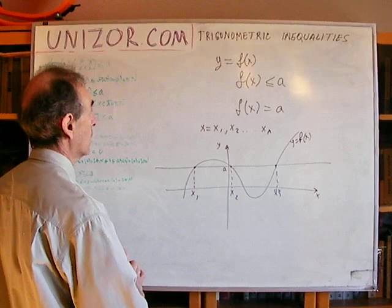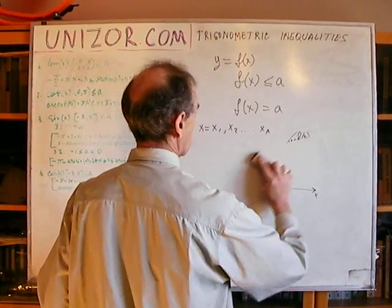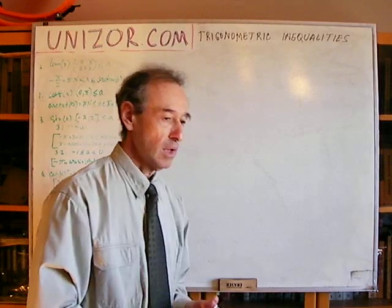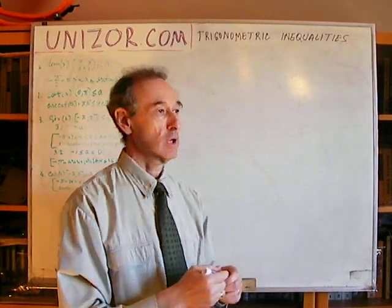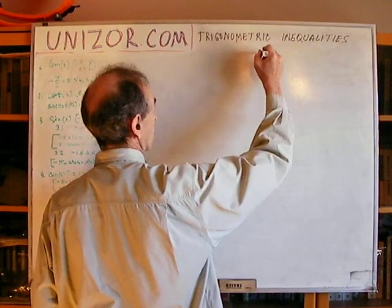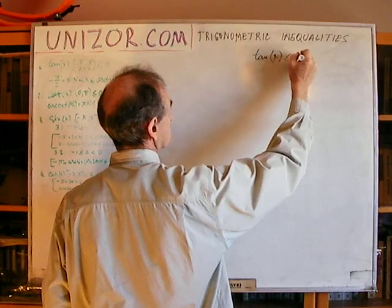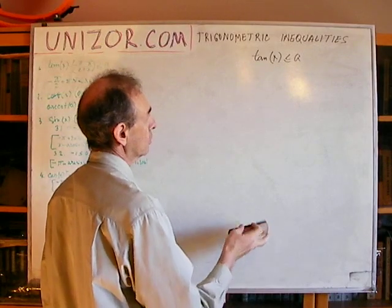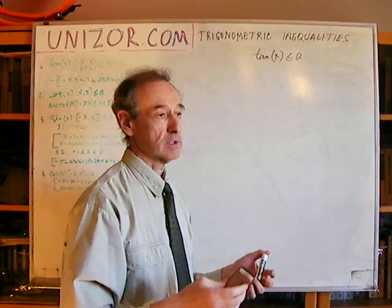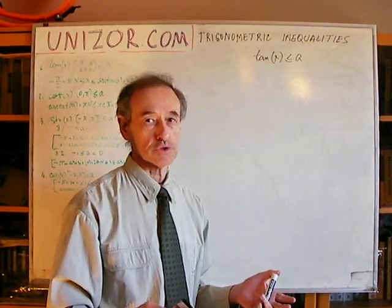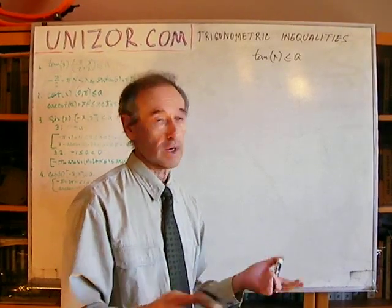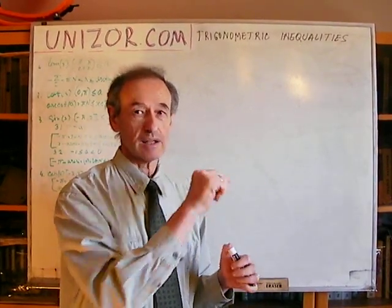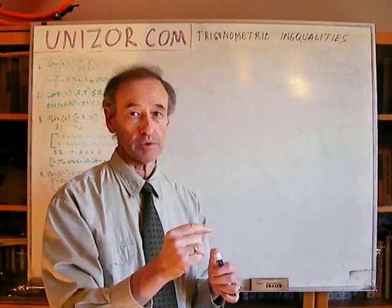So that's the introduction to this lecture. Now let's go to particular examples. My purpose during this lecture is to explain solutions of inequalities like tangent of x less than or equal to a, cotangent, sine, and cosine — basically four cases. I will use less than or equal, but it's trivially expandable to less than, greater than, or greater than or equal. The difference is whether or not to include the points exactly where the function equals a.